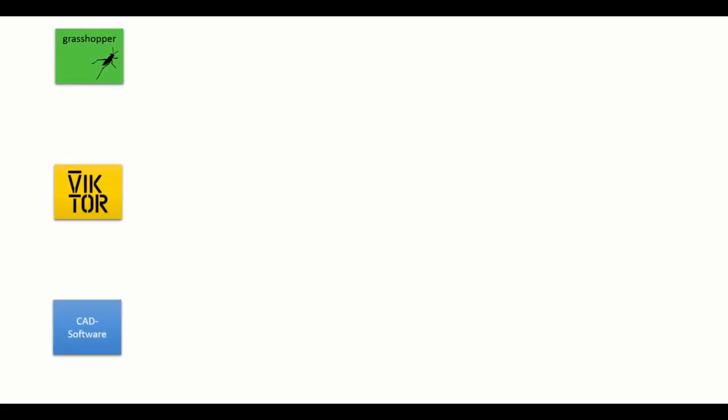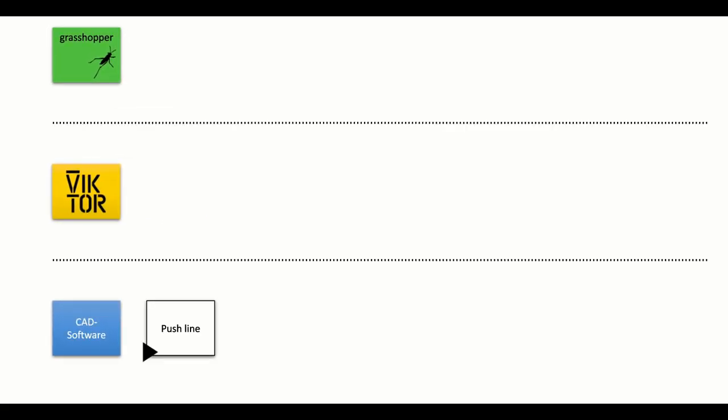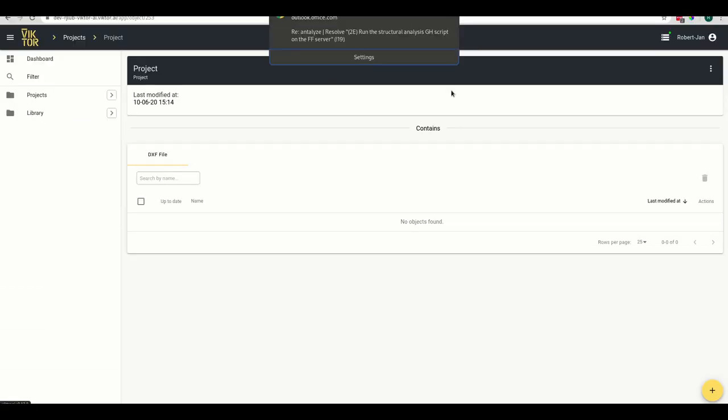There are two ways of starting the application flow. The first is to build a custom integrator used from within the CAD software — you draw a line, push a button, and that line is uploaded to Victor. Alternatively, you can upload a line straight into Victor, in this example as a DXF file, though it could also be done as JSON.